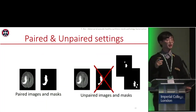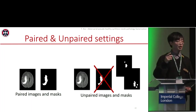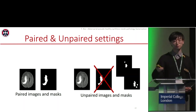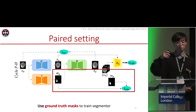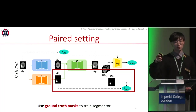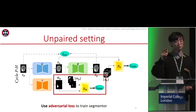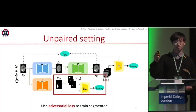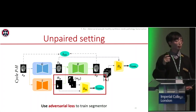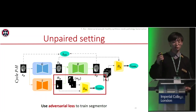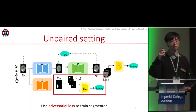We also have two training settings. The first is the paired setting, where we have paired pathological images and pathology masks. The other is the unpaired setting, where we don't have such pairs, but we do have segmentations from other subjects — some random segmentations. In the paired setting, we simply use the ground truth mask to train the segmenter using dice loss. In the unpaired setting, since we don't have ground truth, we involve a mask discriminator called DM.